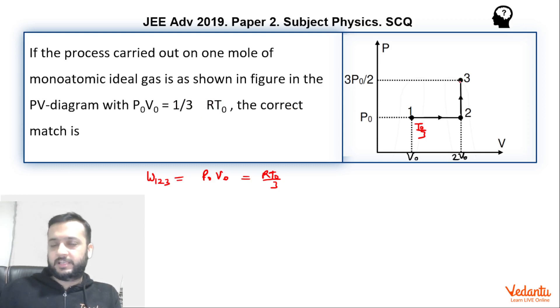And here the pressure has become 3 by 2 times, volume has become twice. So we can say that 3P0 by 2. So basically we can straight away say that pressure has become 1.5 times, volume has become 2 times. That means overall temperature would have become thrice. So here temperature has become T0.